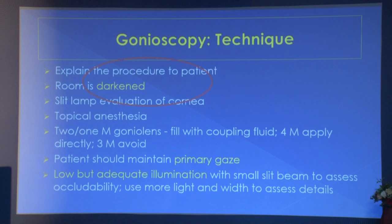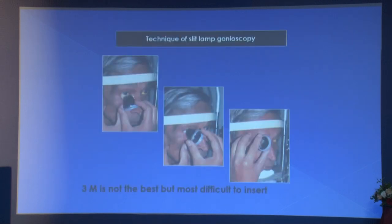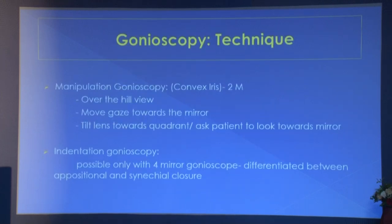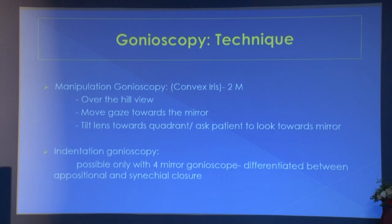The manipulative gonioscope gives an over-the-hill view. Move the gaze towards the mirror, tilt the lens towards the quadrant, and ask the patient to look towards the mirror — this allows you to peek inside the angle since the iris is convex and acts like a hill. Indentation gonioscopy is possible only with the four-mirror gonioscope and differentiates between apposition and synechial closure.